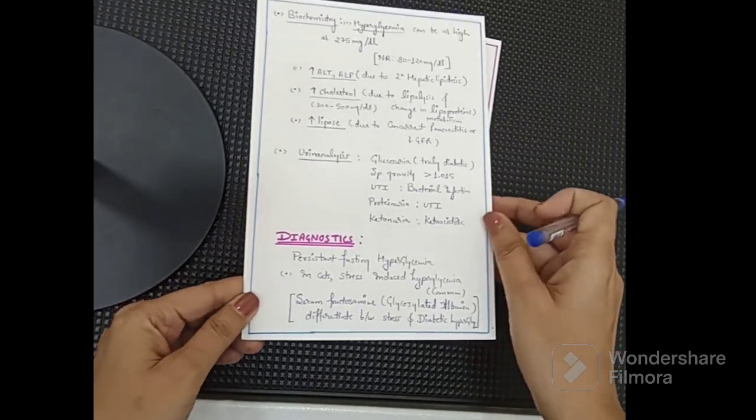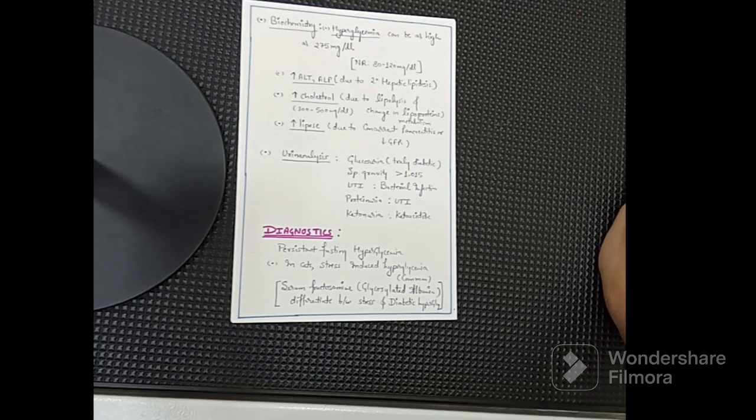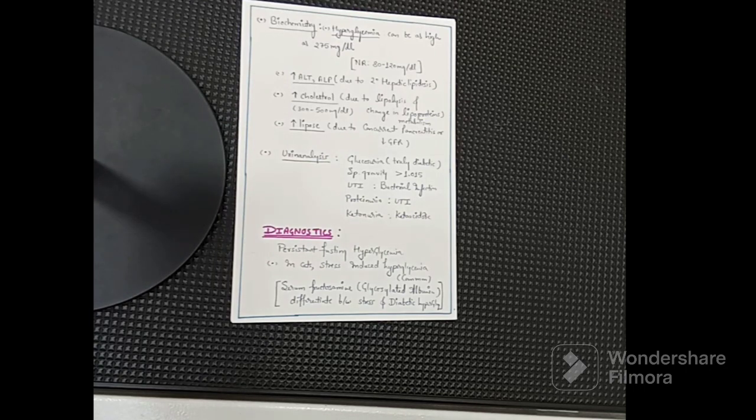Now let's discuss biochemistry. Hyperglycemia can be as high as 275 mg/dL — the normal range is 80–120 mg/dL. Elevated ALT and ALP are also seen due to secondary hepatic lipidosis. Elevated cholesterol occurs because of abnormal lipid metabolism from lack of intracellular glucose. High lipase may be present due to concurrent pancreatitis or reduced glomerular filtration rate.